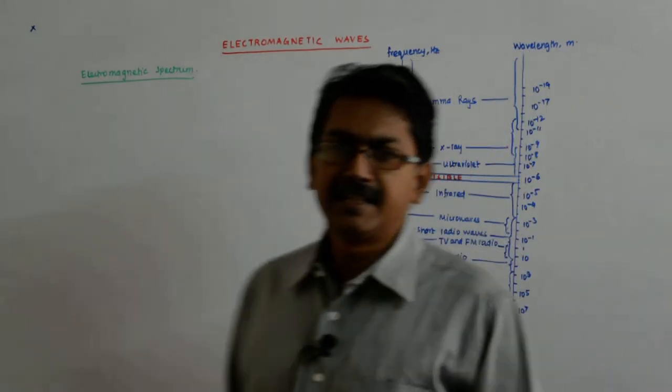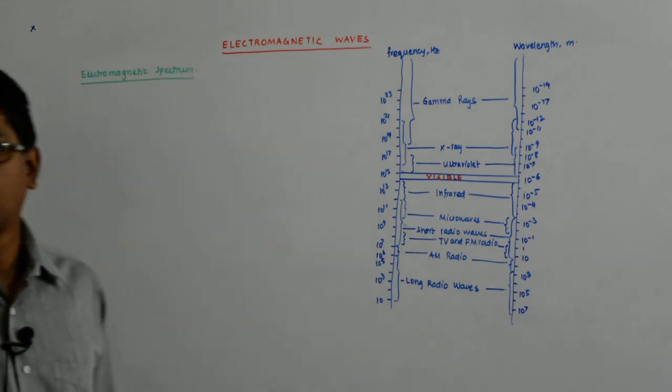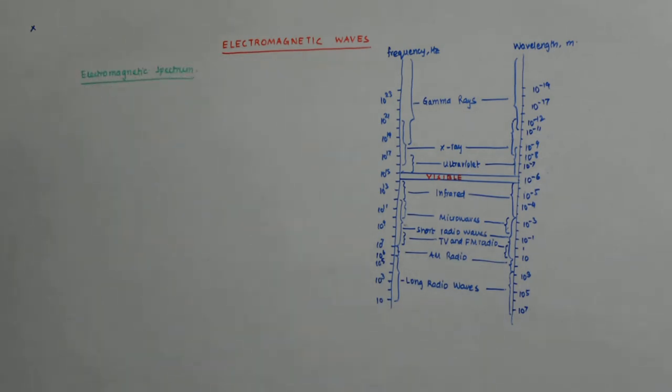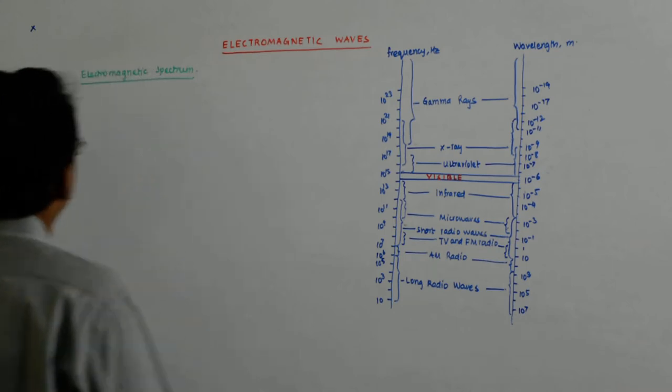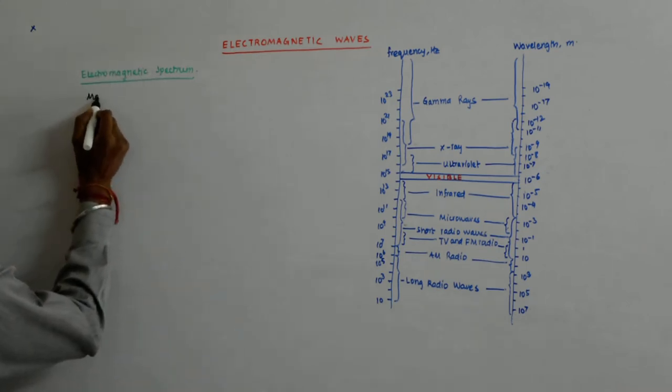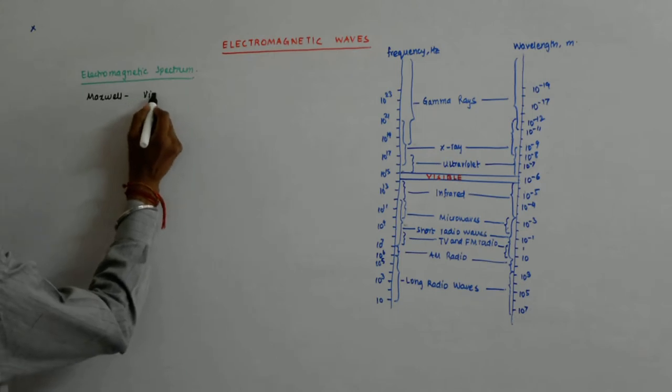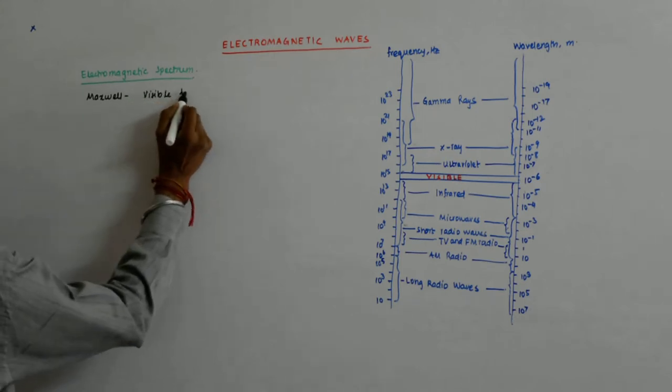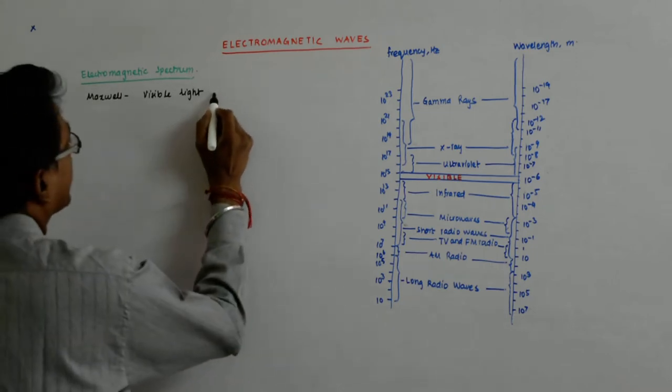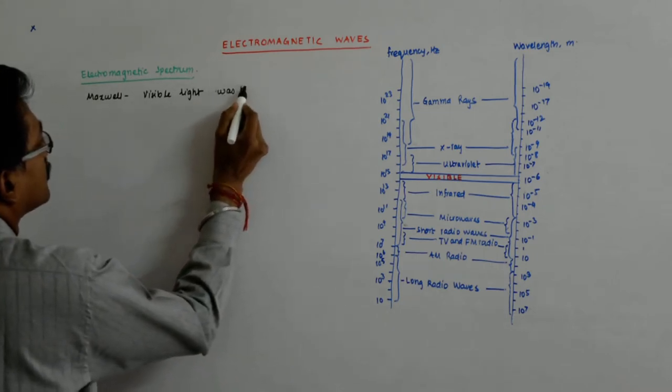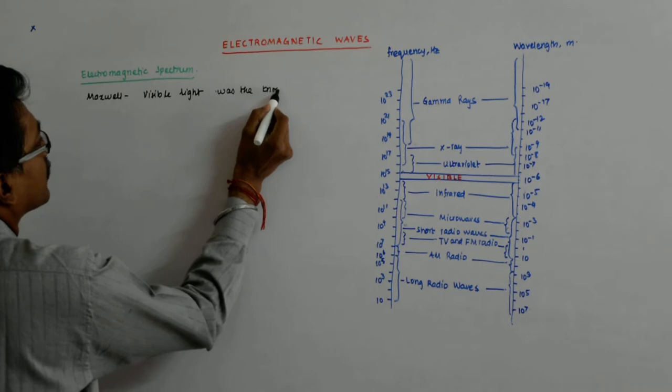We've now come to what an electromagnetic spectrum is all about. At the time of Maxwell, only the visible light was the known electromagnetic wave.